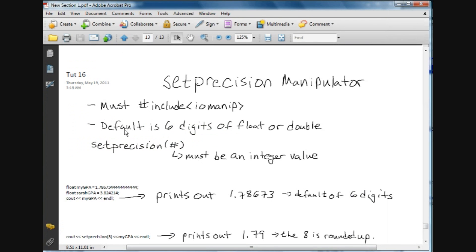Also, just to refresh your memory, the default value when we C out a float or a double is six digits. In order to enact, so to speak, the setprecision manipulator, we just type out the word setprecision and then inside parentheses we put a numeric value. That number must be an integer value.